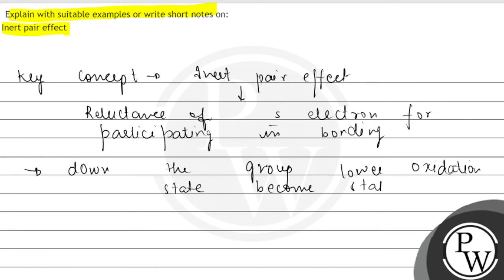For example, talking about Group 13, Al shows plus 3 as stable. But talking about thallium, Tl shows plus 1 oxidation state. Down the group, the stability of plus 1 state increases. Hope this is clear to you. Thank you so much.